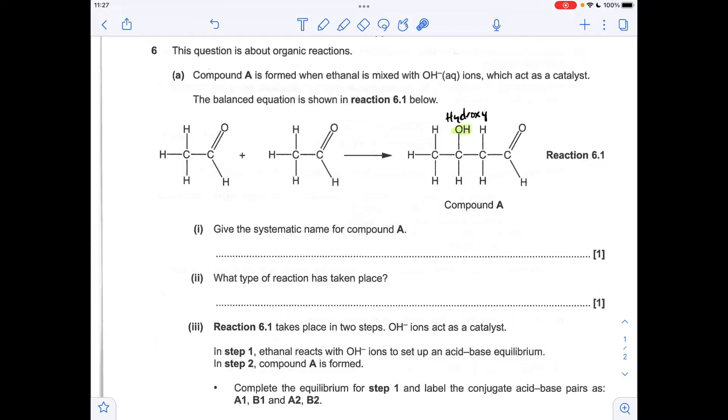First thing we've got to do is give the systematic name for compound A. You'll notice I've highlighted the OH group. This is going to be called a hydroxy group in this compound. So essentially what we've got is butanil with a hydroxy group on carbon 1, 2, 3. So it's called 3-hydroxybutanil.